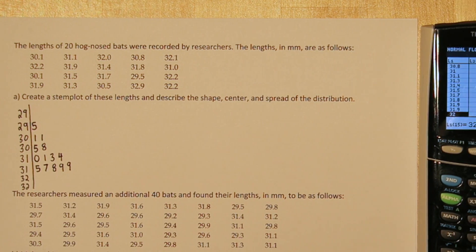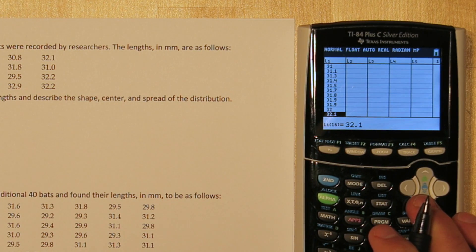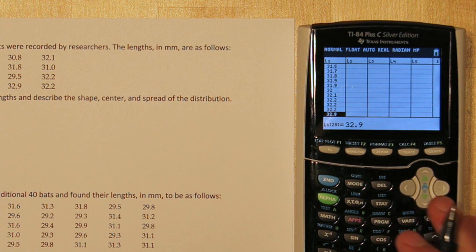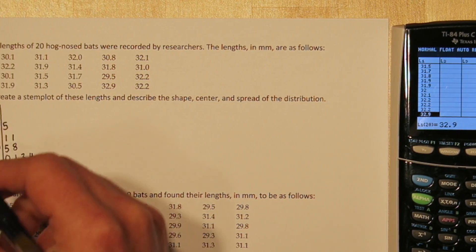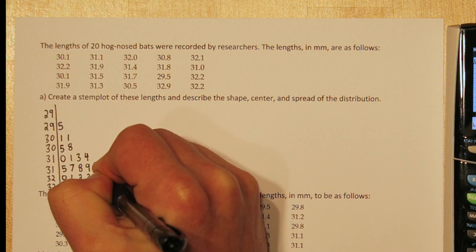Now for the first 32 stem, it looks like we have 32.0, 32.1, 32.2, another 32.2, another 32.2, and then we have a 32.9, which is actually our last value, and that's going to go in the second 32 stem. So that's our stem plot.